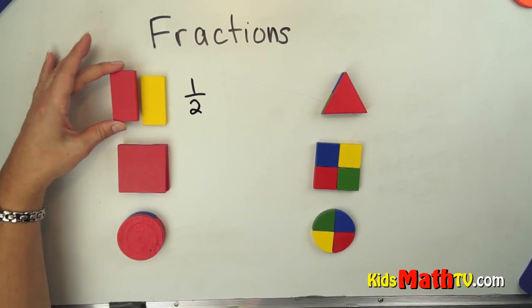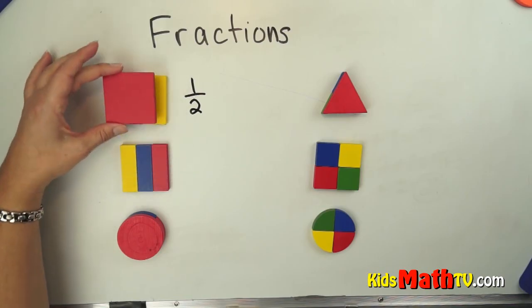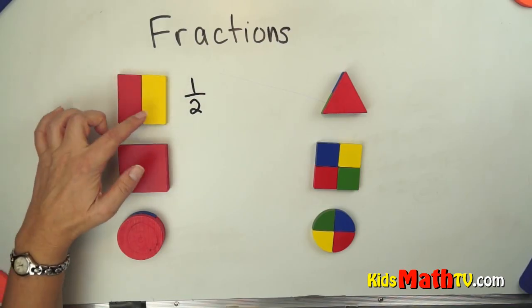This is the exact same shape and size as the other piece. And if we put two of them together, we get this whole square. So we call that one half.